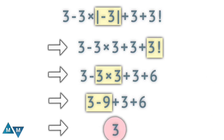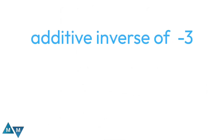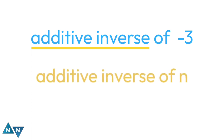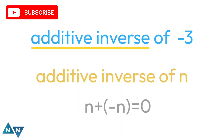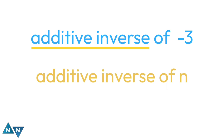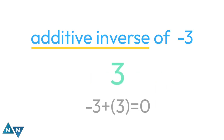The question becomes simpler: we have to find the additive inverse of three. An additive inverse of a number is defined as the value which, when added to the original number, results in zero. So the additive inverse of minus three equals three. This is our final answer.